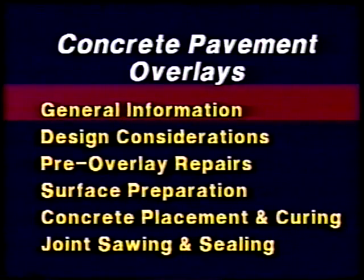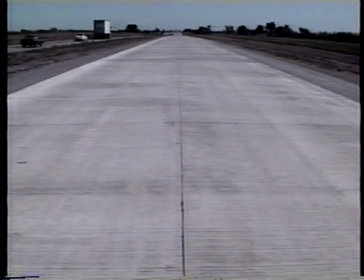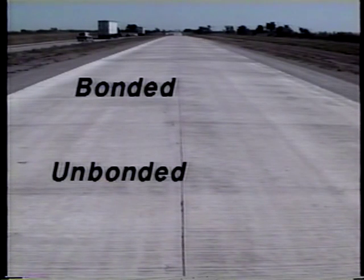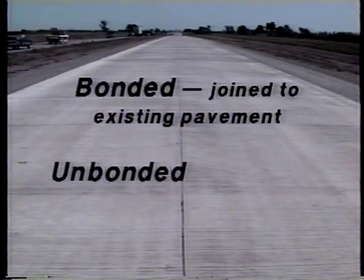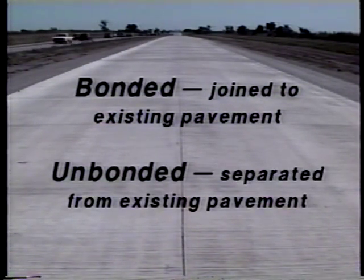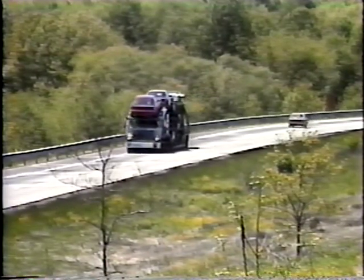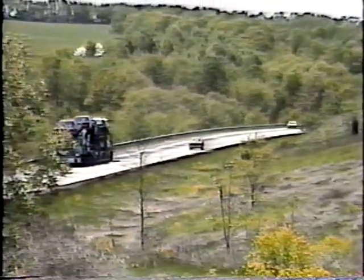There are two types of concrete overlays: bonded and unbonded. Bonded overlays are joined to the existing pavement so that the two function monolithically. Unbonded overlays are separated from the existing pavement by placing a separation layer between them. The condition of the existing pavement determines which type of overlay is appropriate for a given project.